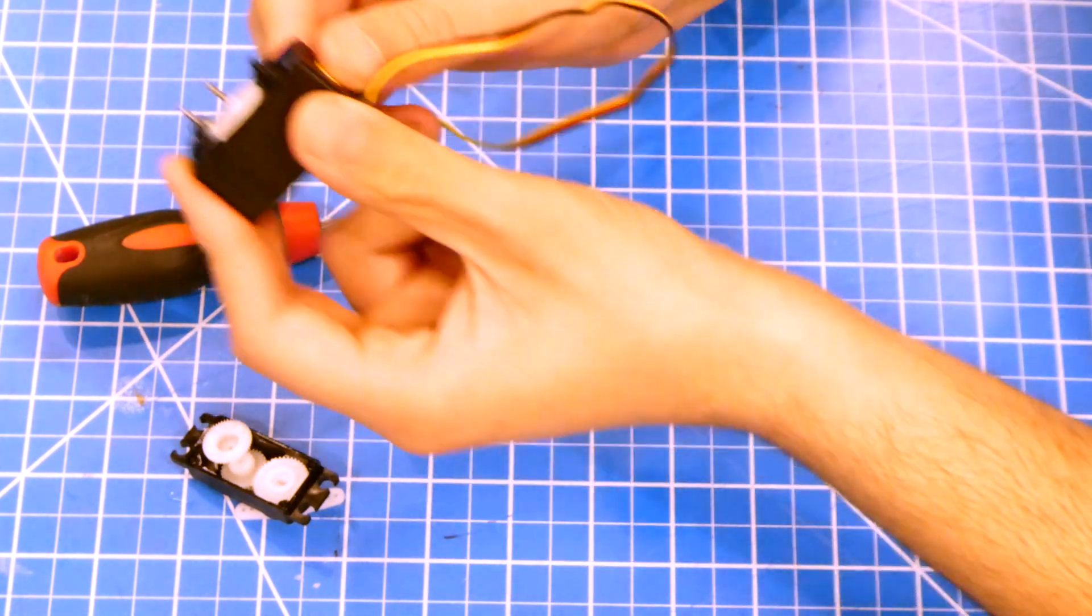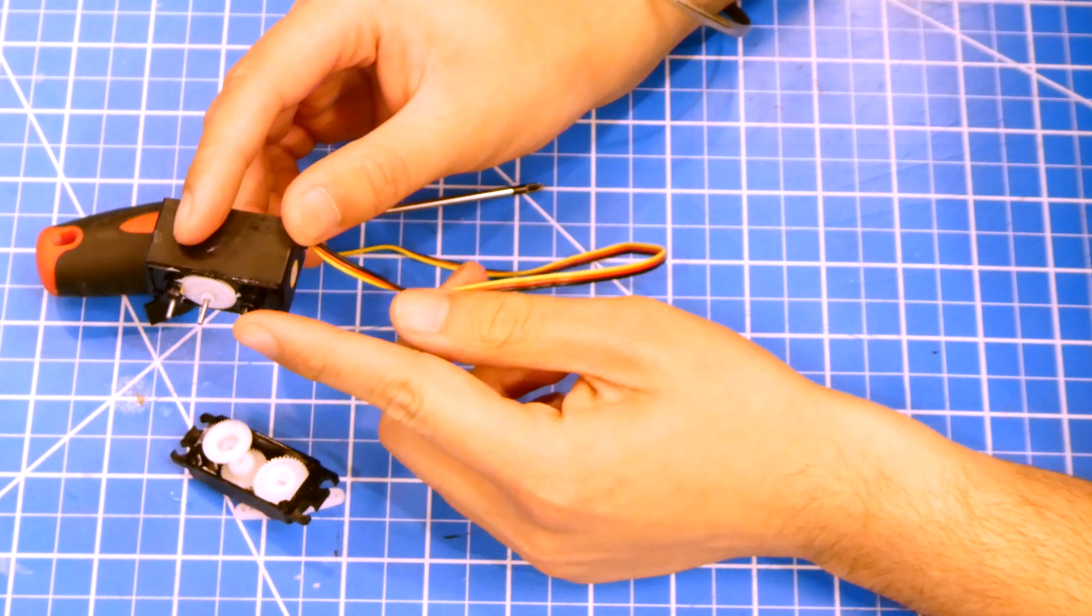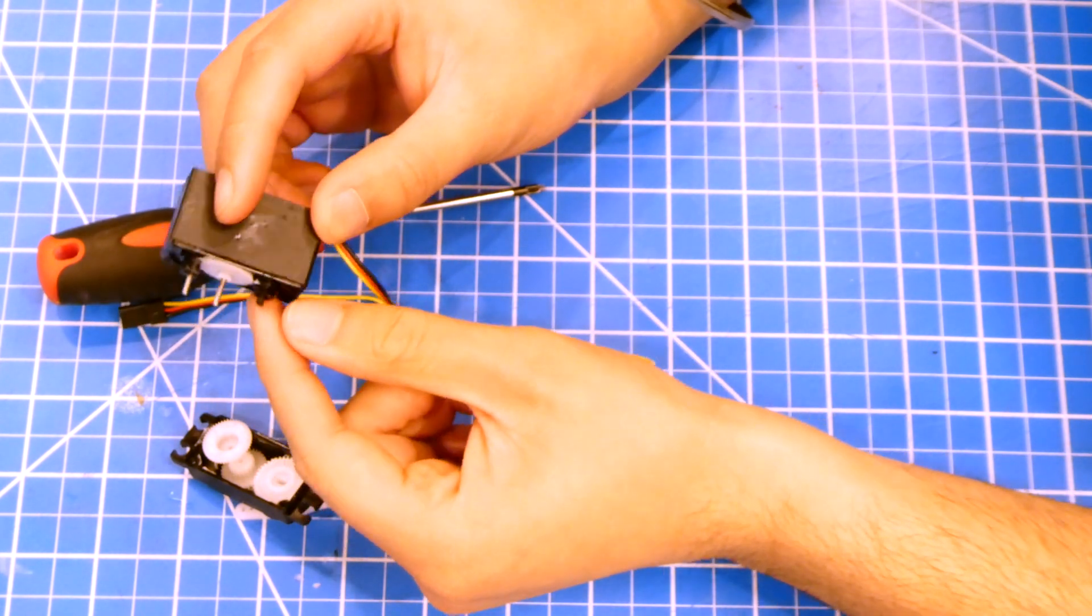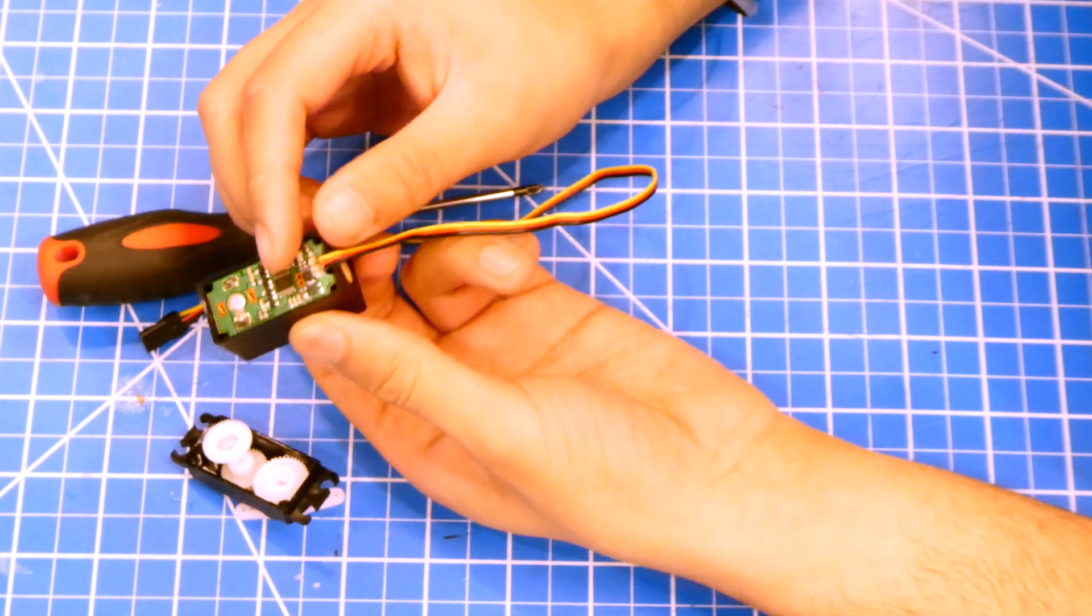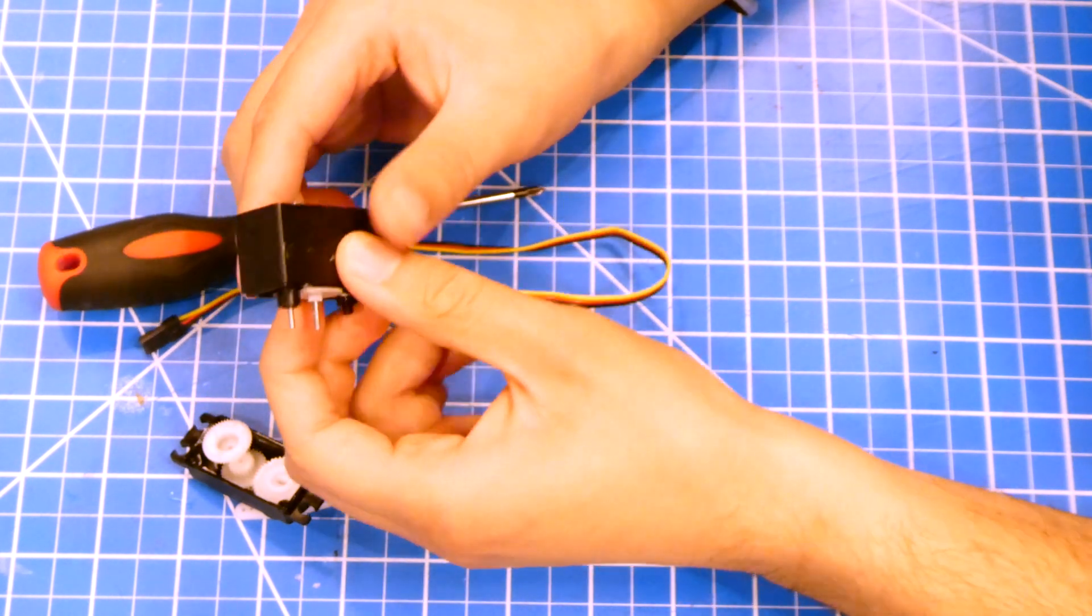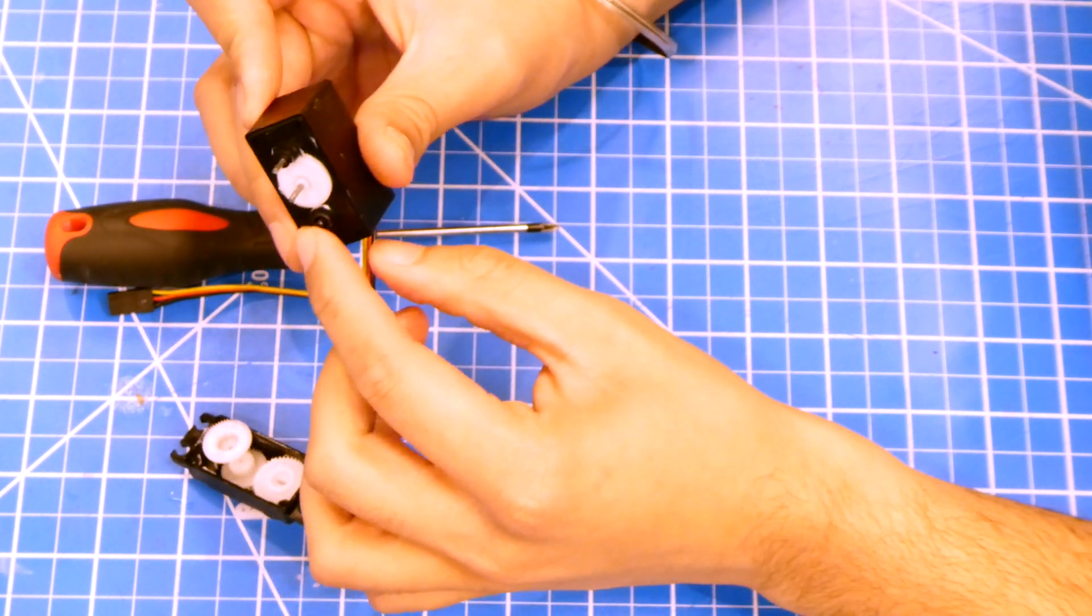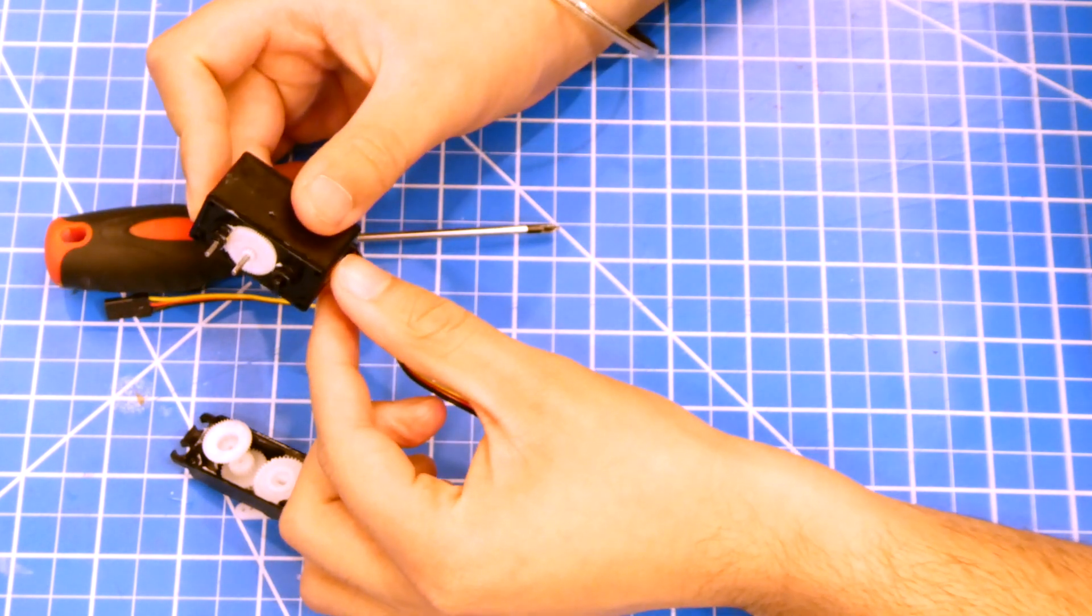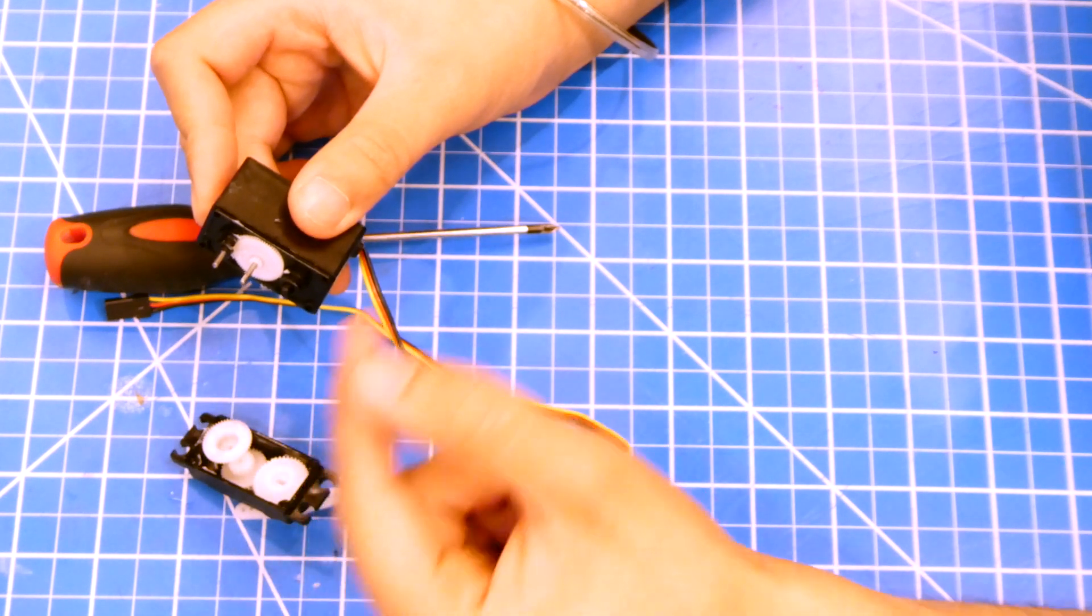So this potentiometer right here is the feedback mechanism in order to communicate with the chip on the back to say that we're spinning one direction or the other direction. So we want this to stop spinning essentially, so that it always thinks that it's never achieved the direction that it wants to get to, so that it continuously spins forever.